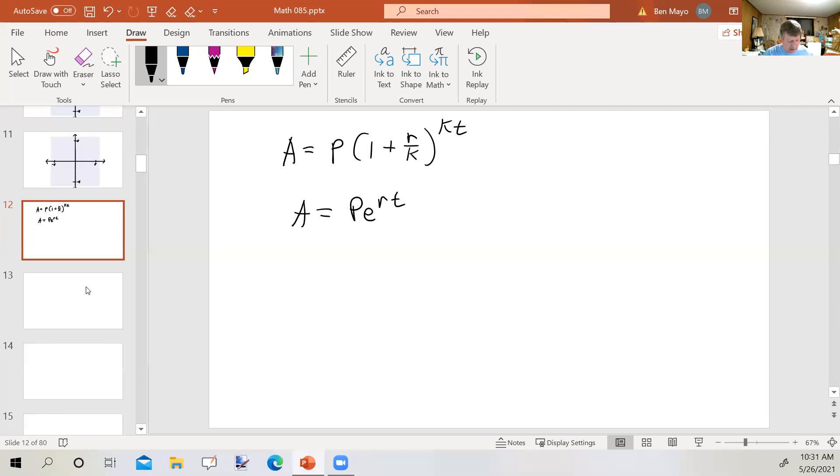Today we're going to look at a different formula, which is A equals P e to the rt power, or A equals PERT as I like to say, but it is not P E R T, it's P times e to the rt power. This formula is used when the growth or the decay happens continuously.